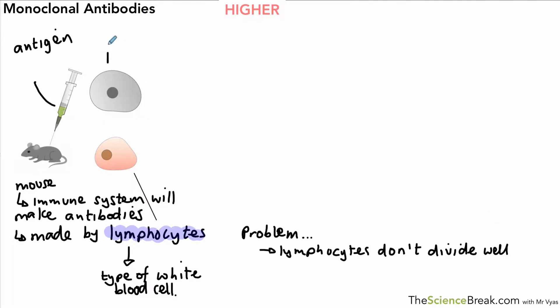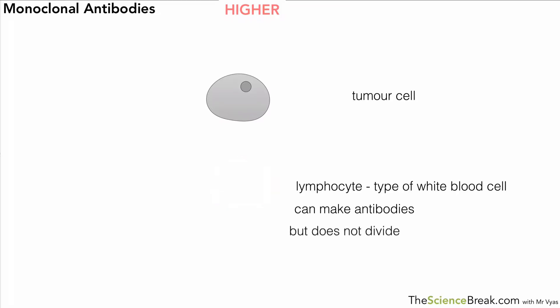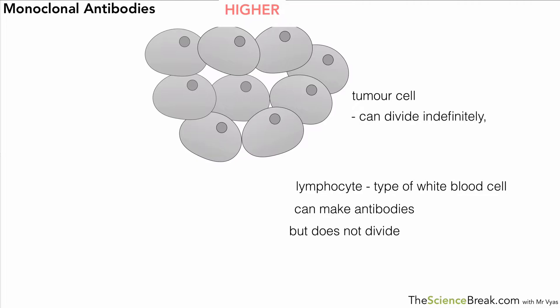We can use another type of cell — a tumor cell. Just as it sounds, it's associated with cancer, but in this case it's a type of cell that can be grown in the lab and divides rapidly, which is exactly what we want. The lymphocyte can produce the antibodies we want but cannot divide well. The tumor cell can divide very rapidly, in large numbers, and indefinitely — but it doesn't produce the antibodies that we want.